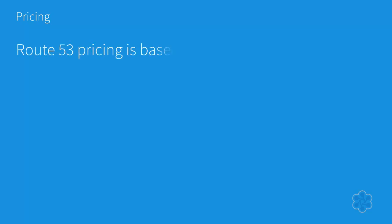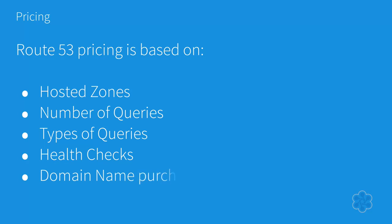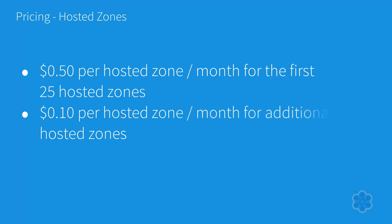Pricing for Route 53 is based on hosted zones, the number of queries and the type of these queries — for example, geolocation and latency — health checks configured, and any domain names that you purchase from AWS directly. Hosted zones are billed at $0.50 per hosted zone per month for the first 25 hosted zones, and $0.10 per hosted zone per month for additional hosted zones. The monthly hosted zone prices are not prorated for partial months, and a hosted zone is charged upon setup and on the first day of each subsequent month. To facilitate testing, a hosted zone that is deleted within 12 hours of creation is not charged; however, any queries on that zone will be charged at the defined rates.